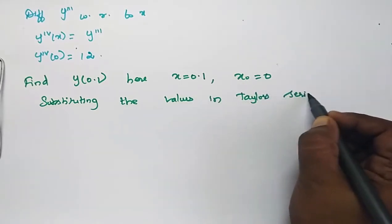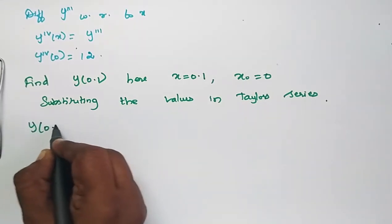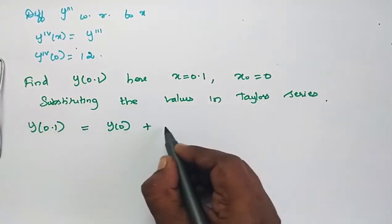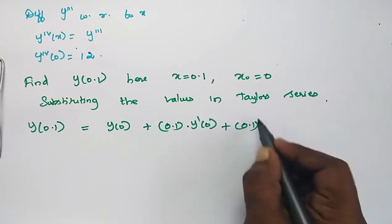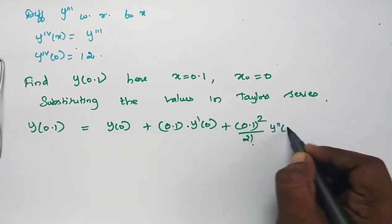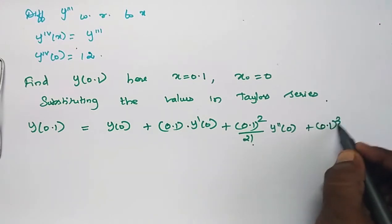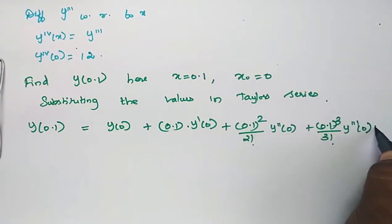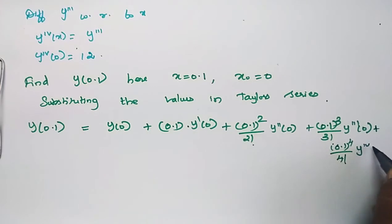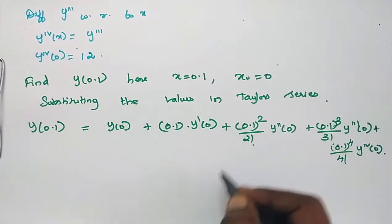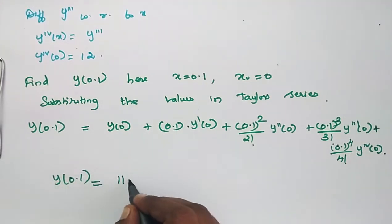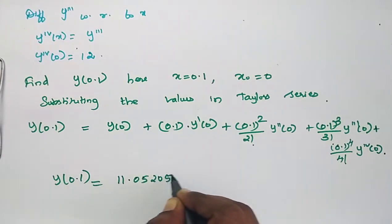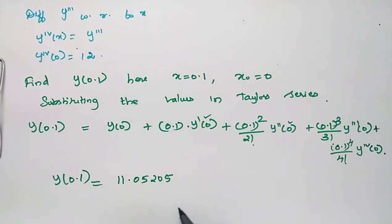Substituting the values into the Taylor series for y(0.1): y(0.1) = y(0) + 0.1·y'(0) + (0.1)²/2! · y''(0) + (0.1)³/3! · y'''(0) + (0.1)⁴/4! · y⁴(0). This gives y(0.1) = 11.05205.